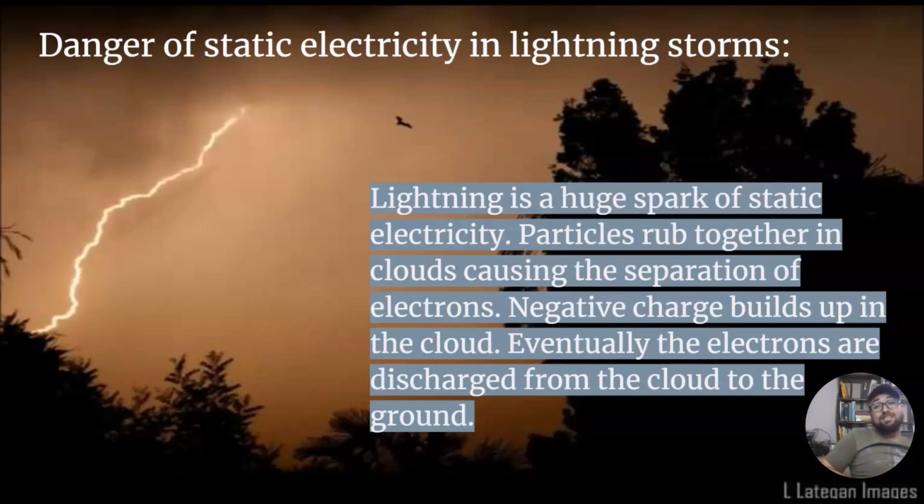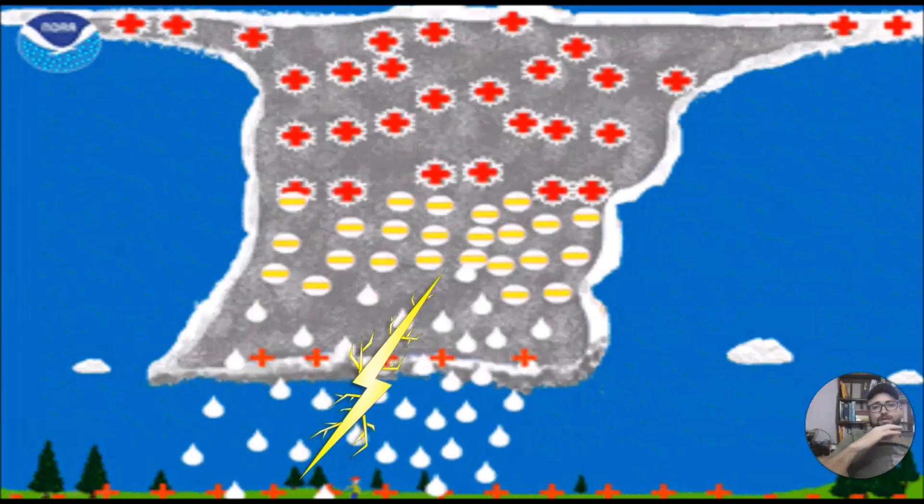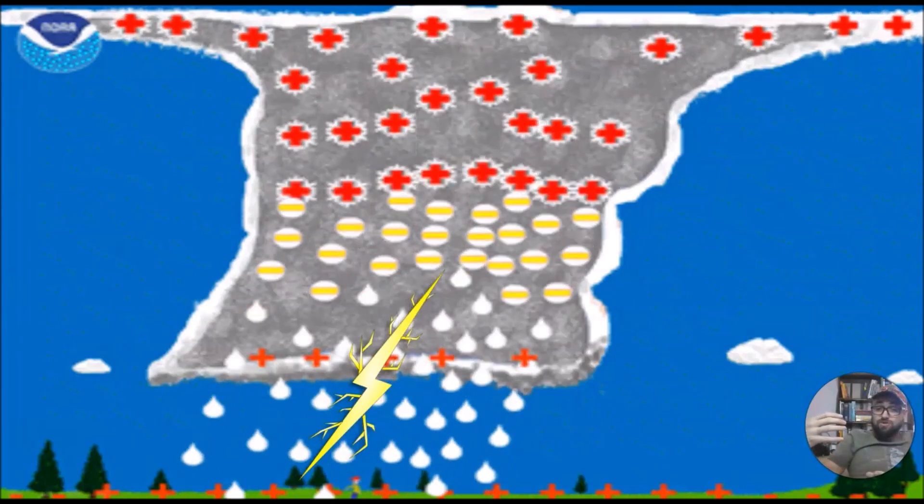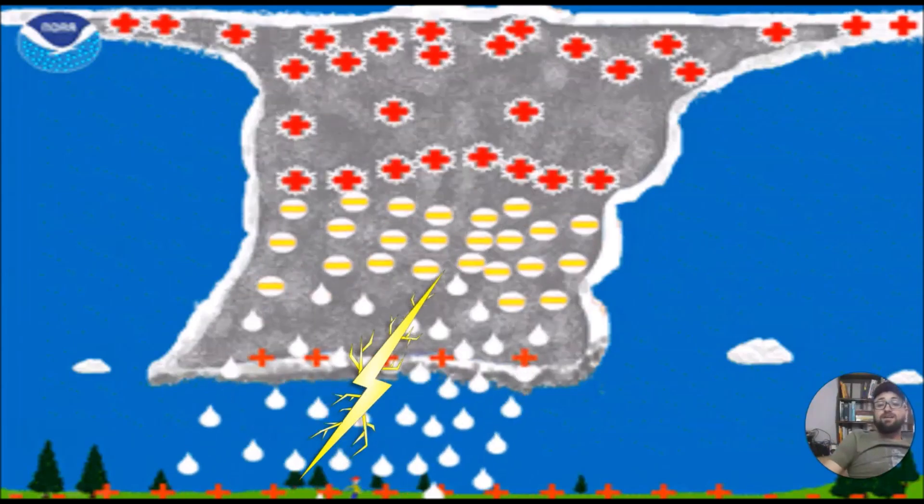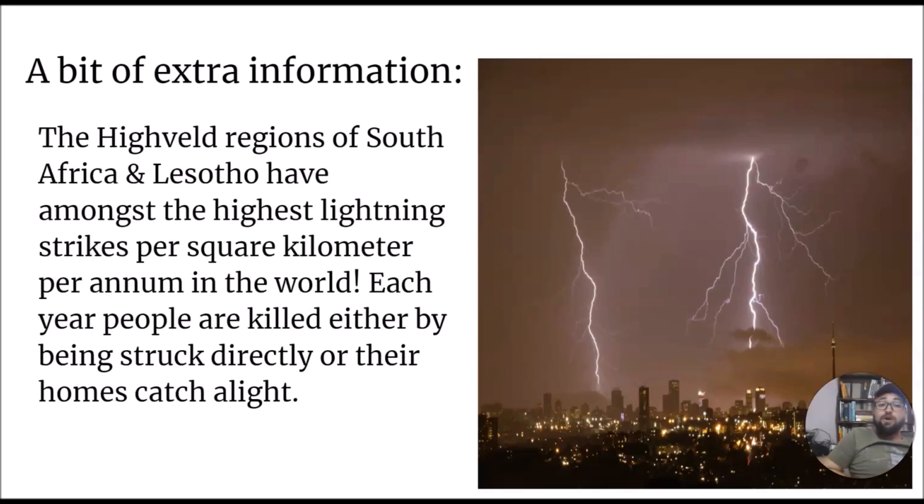Danger of static electricity in lightning storms. Lightning is a huge spark of static electricity. Particles rub together against one another in clouds causing the separation of electrons. Electrons, negative charge, build up in the cloud. Eventually the electrons are discharged from the cloud to the ground. As you can see here, the negative charge builds up there, separating itself from the positive. Now you can see that negative charge wants to attract towards the positive charge, which is the ground, and then it finds the shortest route. We have thunder - that's the sound - and lightning - that's the electric spark.